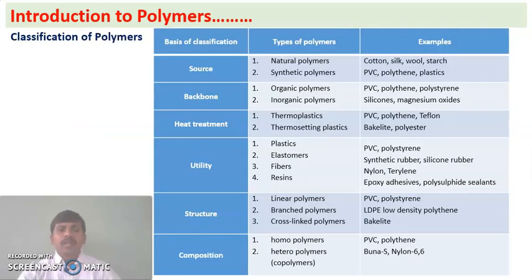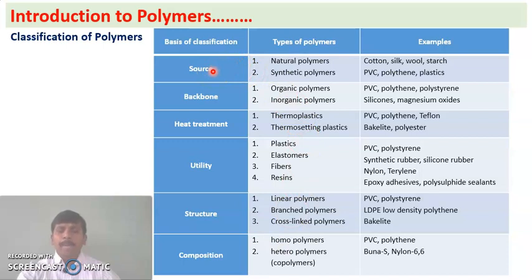The next concept is classification of polymers. We can classify polymers based on different criteria. The first classification is based on source — based on availability or source, polymers are classified into two types: natural polymers and synthetic polymers.